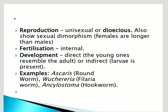Reproduction: these are unisexual or dioecious, meaning male and female organisms are present separately. They also show sexual dimorphism — females are larger than males. Internal fertilization takes place.